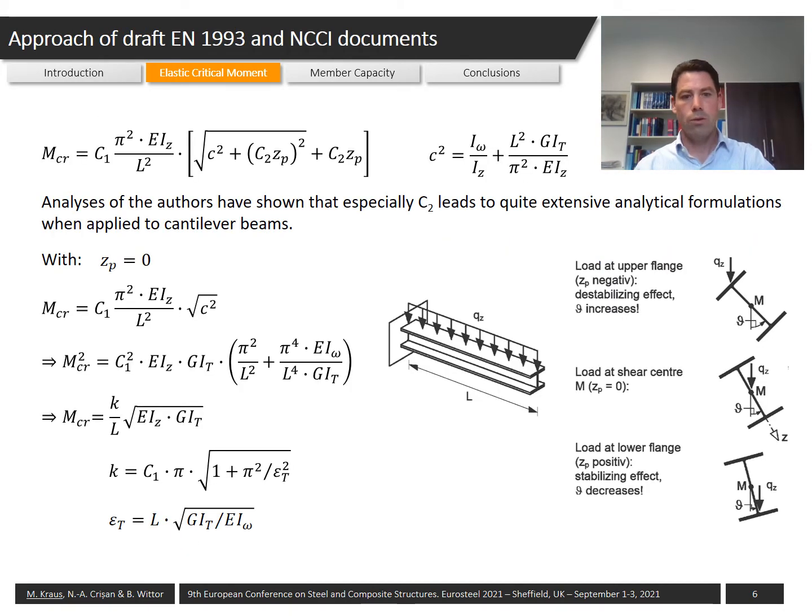A well-known formula for the calculation of the elastic critical moment is shown at the top of this slide. The formula was content of the draft of Eurocode 3 and today it can be found in NCCI documents. It is derived using differential equations, so it is an analytical solution which can be determined for instance for a single span girder with a distributed load.